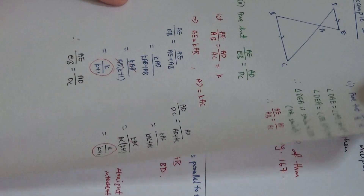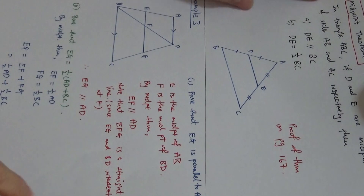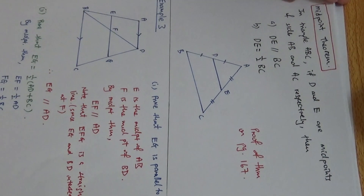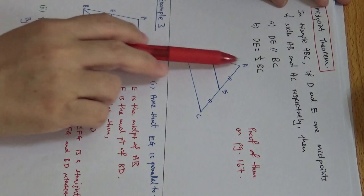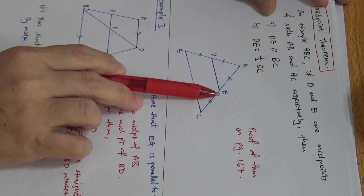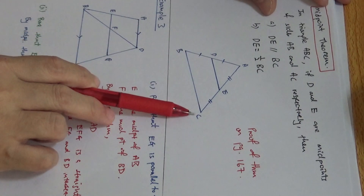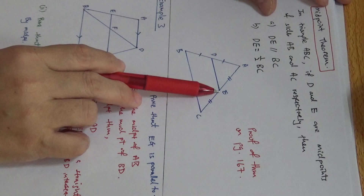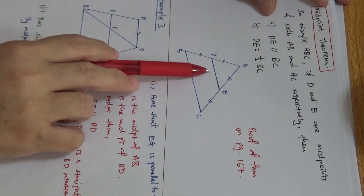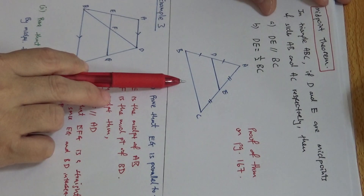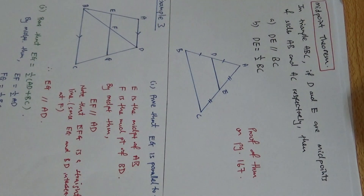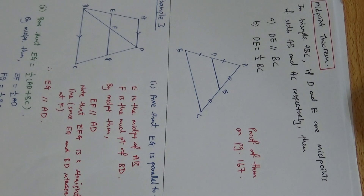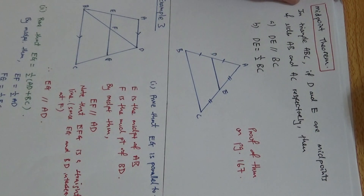Next, I'm going to introduce a theorem called the Midpoint Theorem. In triangle ABC, if D and E are midpoints of side AB and AC respectively, then DE is parallel to BC and DE is half the length of BC. That means if we join the two midpoints, these two lines will be parallel and DE will be half the length of BC, or BC is twice the length of DE. The proof of this theorem is found on page 167. This midpoint theorem is very useful when we prove certain things in this chapter.